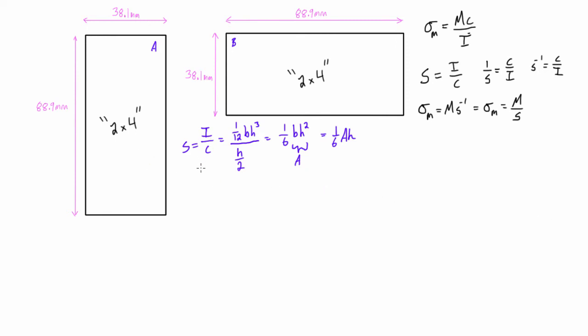Actually, the cross sectional area of this section is just 3,387.09 millimeters. And so when we have our height dimension as being bigger, that means that S will be bigger because area is not changing. If our height is less, if we orient it such that our height is less, then our elastic section modulus will be less.